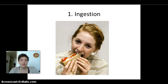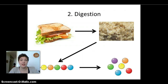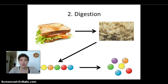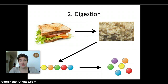The first one is ingestion, which simply means getting the food into your mouth. The second one is called digestion. It basically means making big food particles into smaller ones. For example, we start with a sandwich, then mush it up in our mouths. Eventually they'll end up as big molecules, and at the end we have small molecules that can be absorbed by our blood.